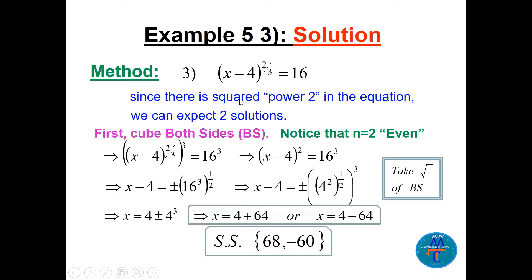To solve (x - 4)^(2/3) = 16, first cube both sides to remove the denominator 3. This gives (x - 4)² = 16³. Now we have a square, so we take the square root of both sides: x - 4 = ±(16³)^(1/2). The power 2 is the critical number here — it generates two solutions.